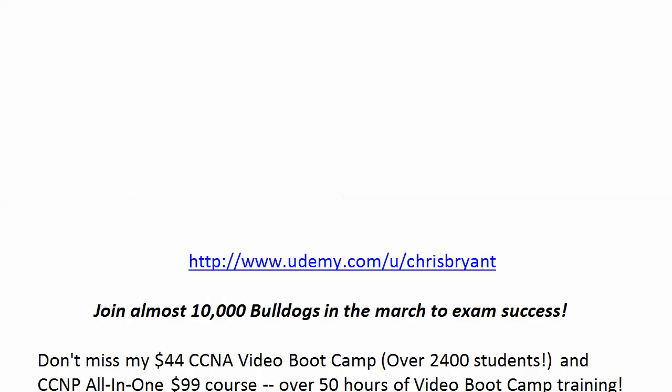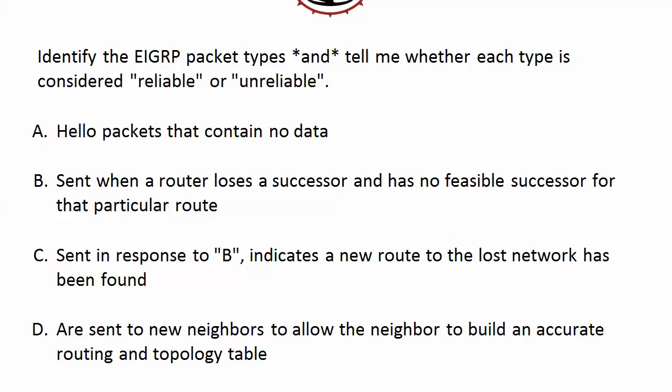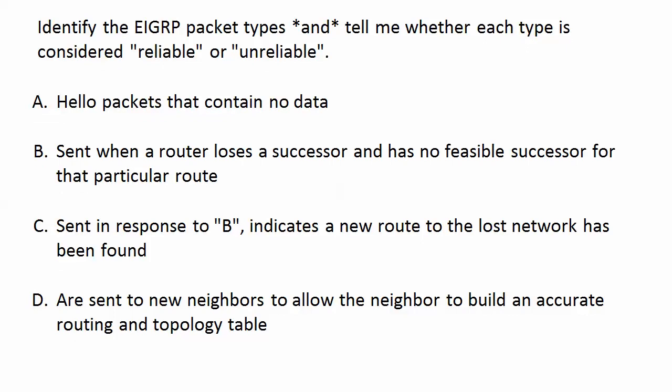So if you want to see what I'm talking about, and I hope you do, let's get right to it. I need you to identify the EIGRP packet type described by each one of these four lines, and tell me whether each one of these types is considered reliable or unreliable. And for extra credit, you can tell me the one packet type I left out. I think that one would be pretty easy, but let's get to these descriptions.